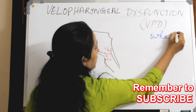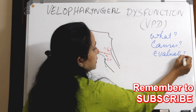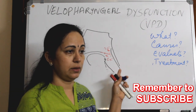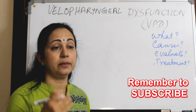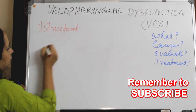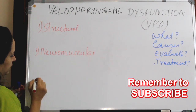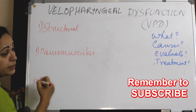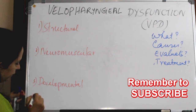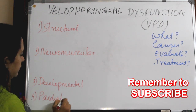You should know what velopharyngeal dysfunction is, what the causes are, how to evaluate it, and how to treat it. The causes can be divided under four main headings: structural, neuromuscular, developmental or faulty training of speech, and as part of pediatric syndromes.